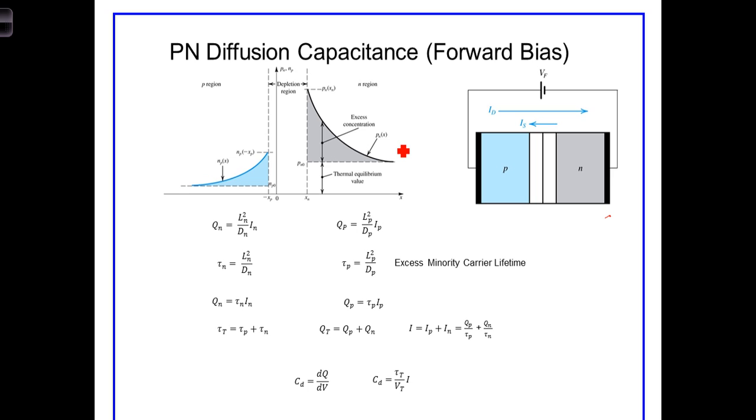But they are continually replaced by new holes and new electrons coming from the power supply. Thus, there is something of a dynamic equilibrium of charge effectively stored on each side of the junction.